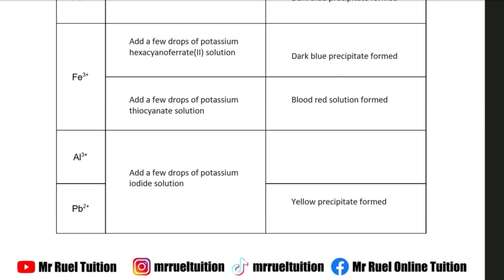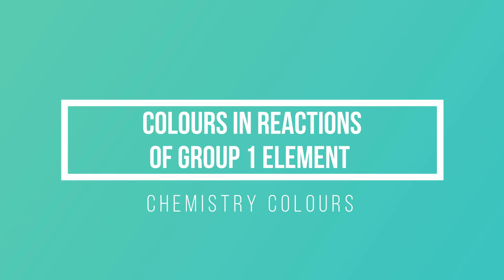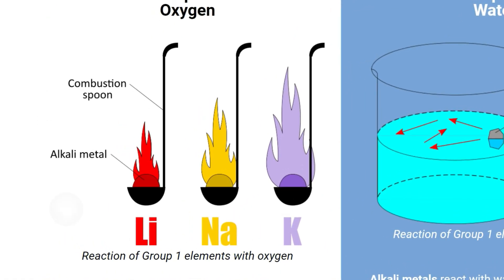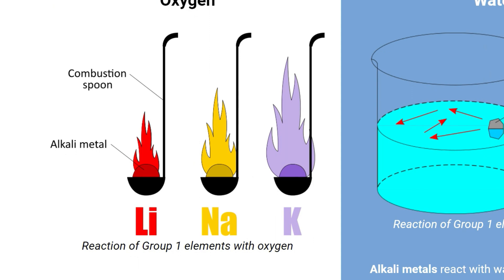Besides salts, we also have colors emerging in the topic of Group 1 elements. When Group 1 elements burn in excess oxygen or react with halogens, the flame color differs depending on the metal: lithium burns with a red flame, sodium burns with a yellow flame, and potassium burns with a lilac flame.